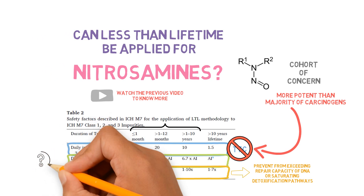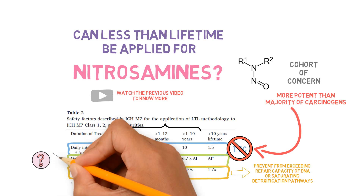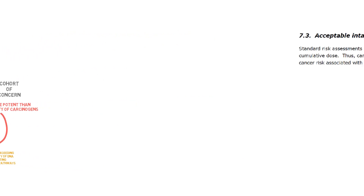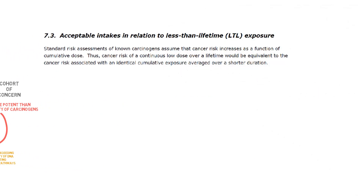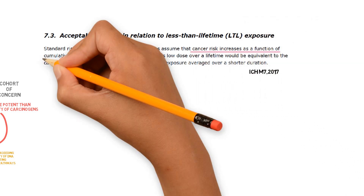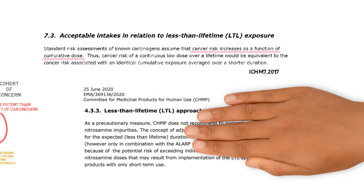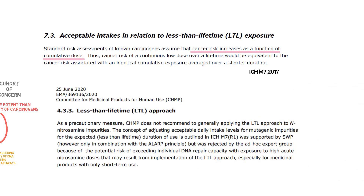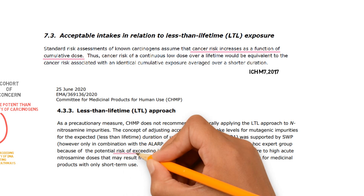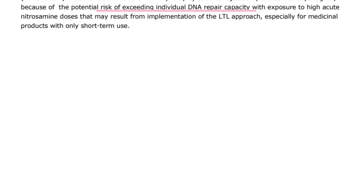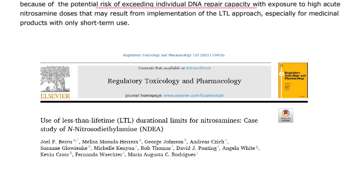But can the less than lifetime durational factors be applied when deriving such limits, the same way that we do for class 1 impurities? In theory, there would be no reason why not, since the underlying principle behind the less than lifetime approach is that cancer risk increases as a function of cumulative dose, and this also applies for nitrosamines. Some concerns have been raised as to whether a higher dose of a nitrosamine over a short duration would exceed the repair capacity of DNA enzymes, so a paper was recently published aiming to answer this question.